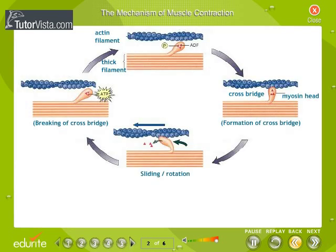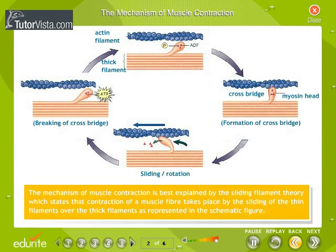The mechanism of muscle contraction is best explained by the sliding filament theory, which states that contraction of a muscle fiber takes place by the sliding of the thin filaments over the thick filaments, as represented in the schematic figure.